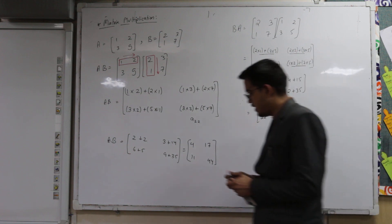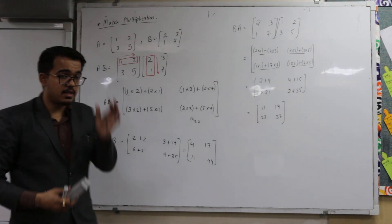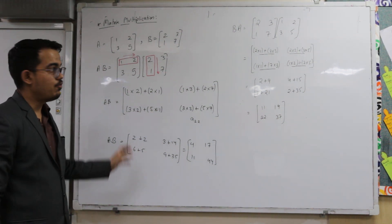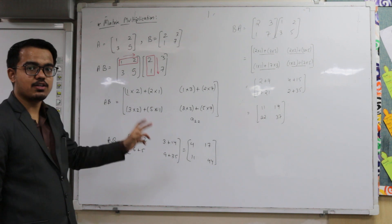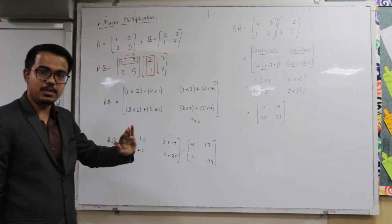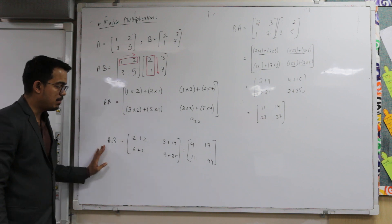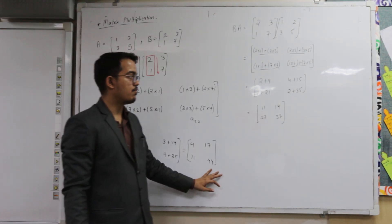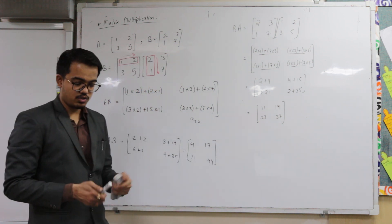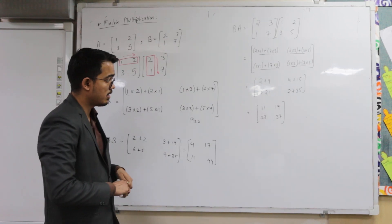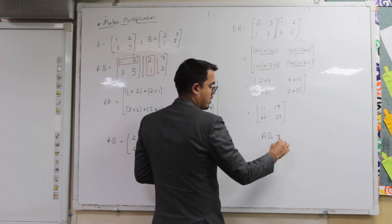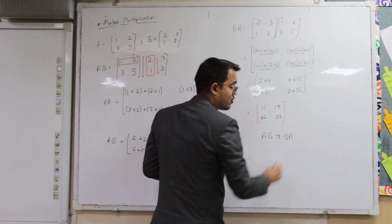If you can see, there is a major difference between AB and BA, which is generally not found in algebra. If you multiply two unlike terms in algebra, the answer is the same. But in matrices, if you are multiplying AB and BA the answers are different. My AB is 4, 17, 11, and 44, but my BA is 11, 19, 22, and 37. So we conclude one of the most important things: AB is not equal to BA when it comes to matrices.